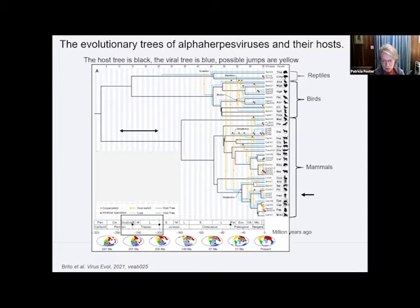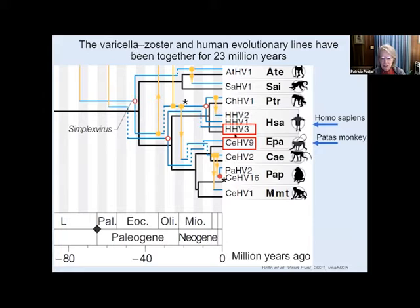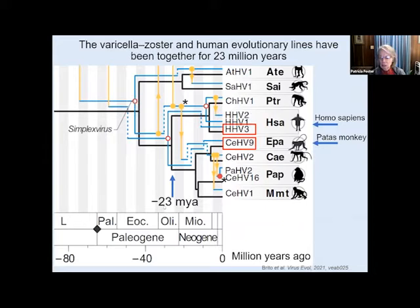Focusing on the primates box: these are the apes and these are the monkeys. Here are humans, and the closest relative to the chickenpox virus actually infects a monkey, not a chimpanzee. If you trace back through the line, you discover that monkeys and apes diverged 23 million years ago. This means the chickenpox virus has been co-evolving with us for 23 million years.